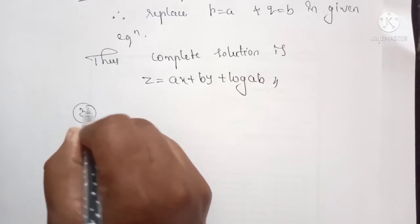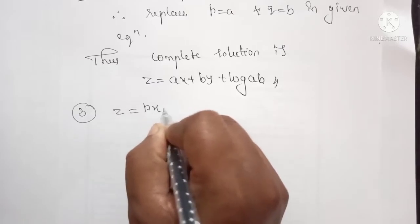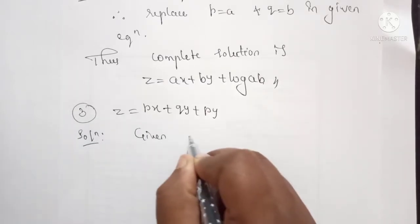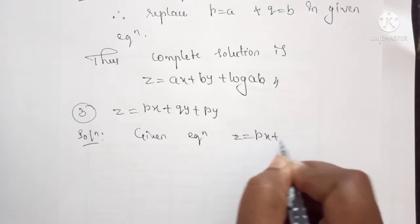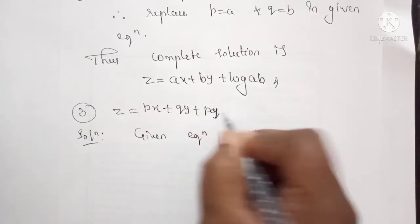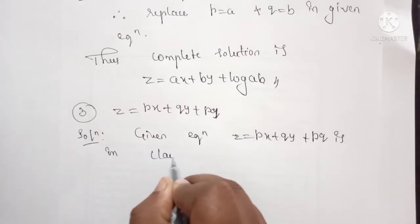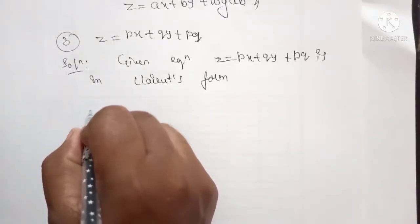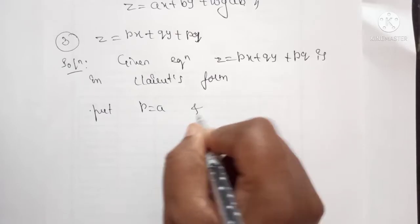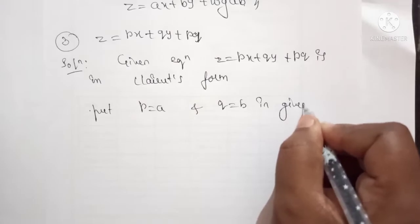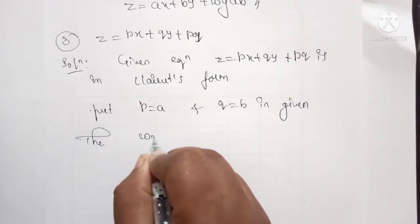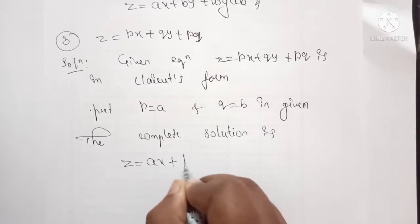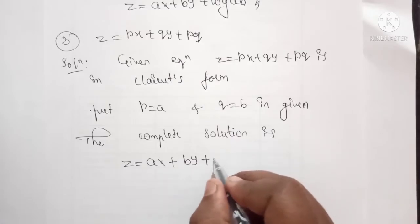One more example: Z equals PX plus QY plus PQ. The given equation is in Clairaut's form. Putting P equals A and Q equals B in the given equation, the complete solution is Z equals AX plus BY plus AB.